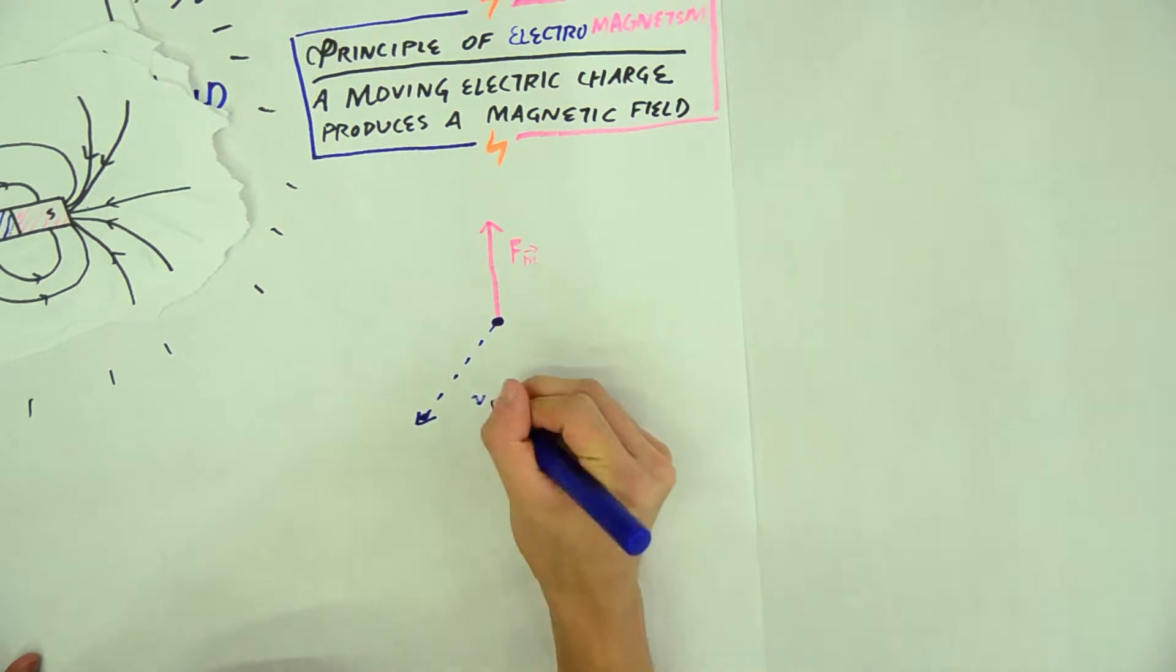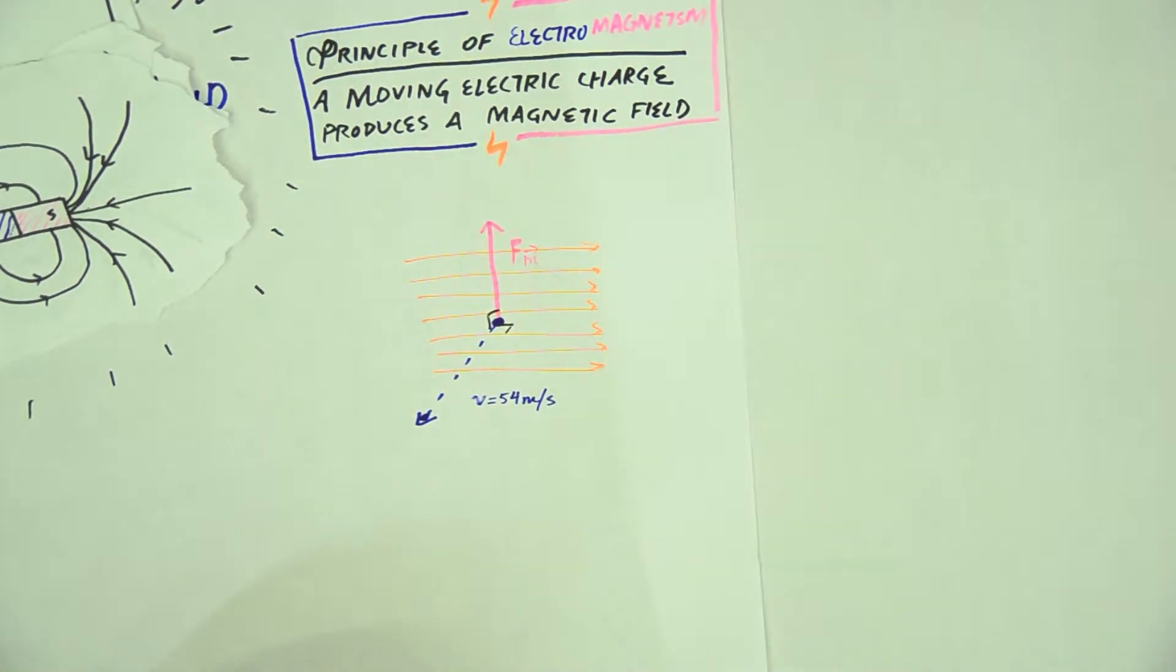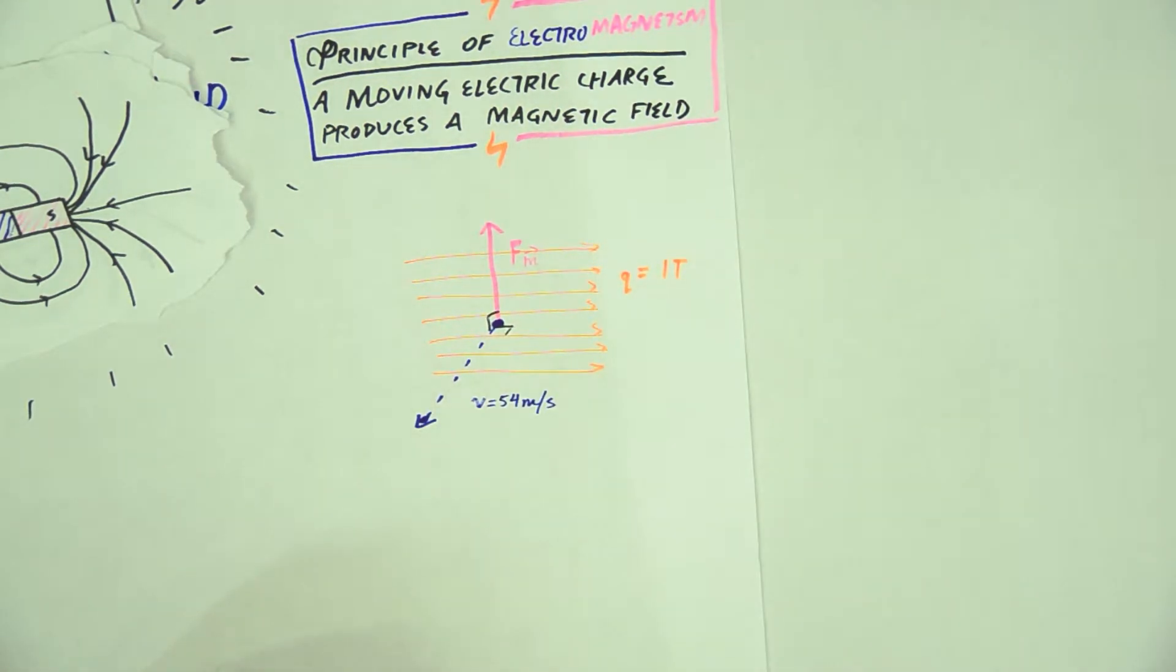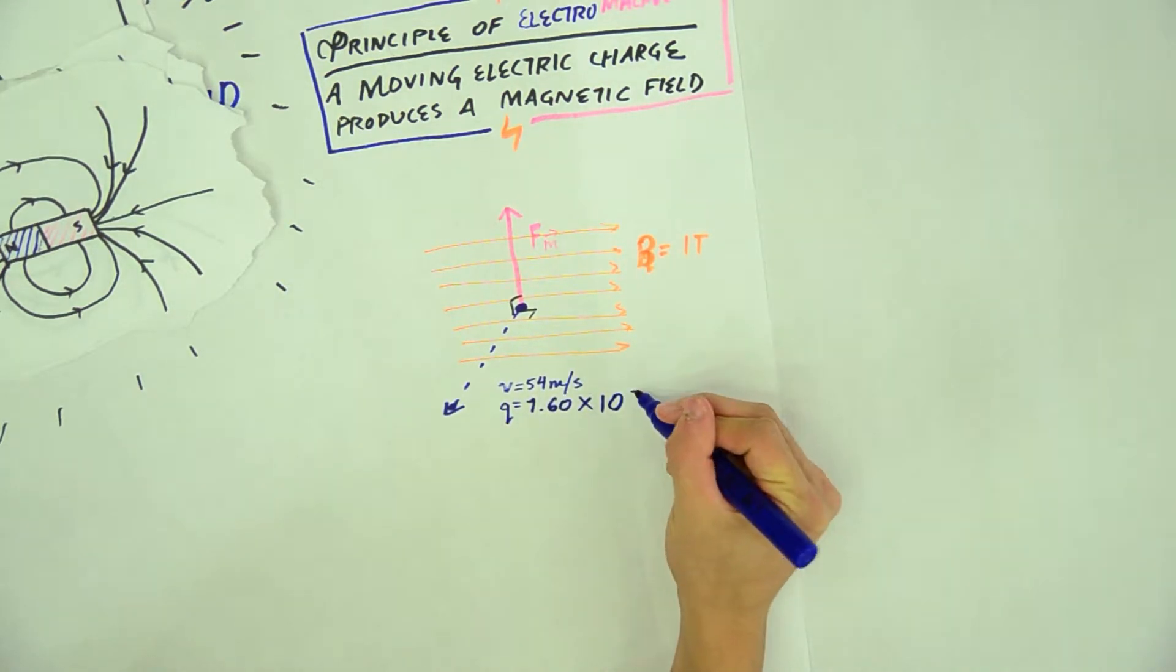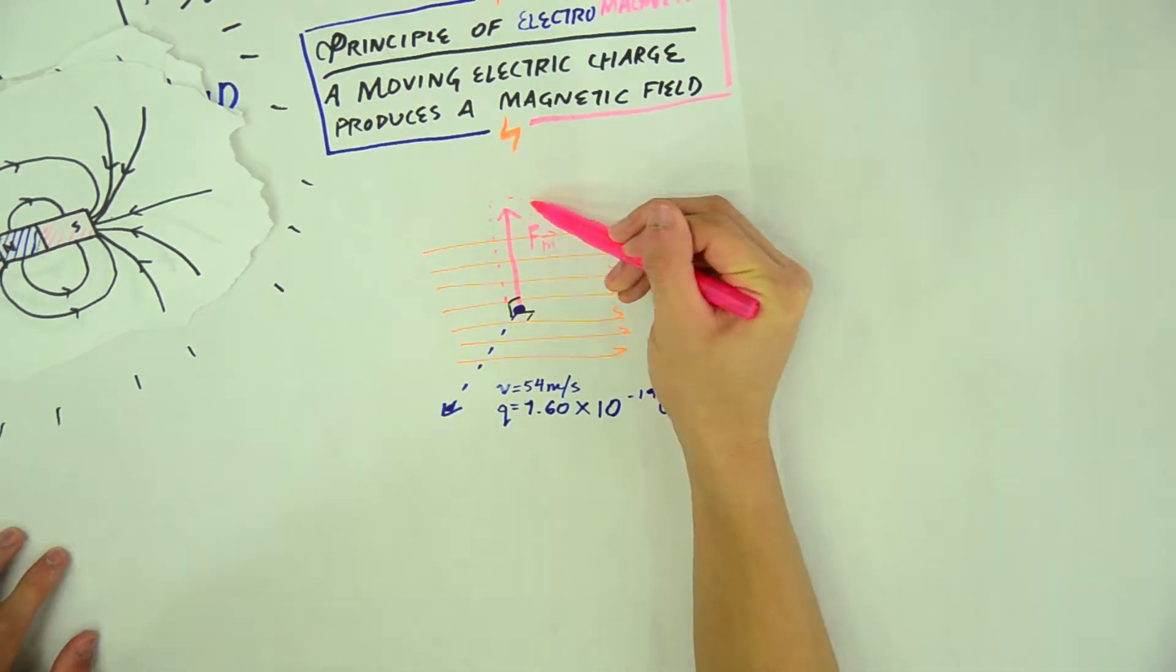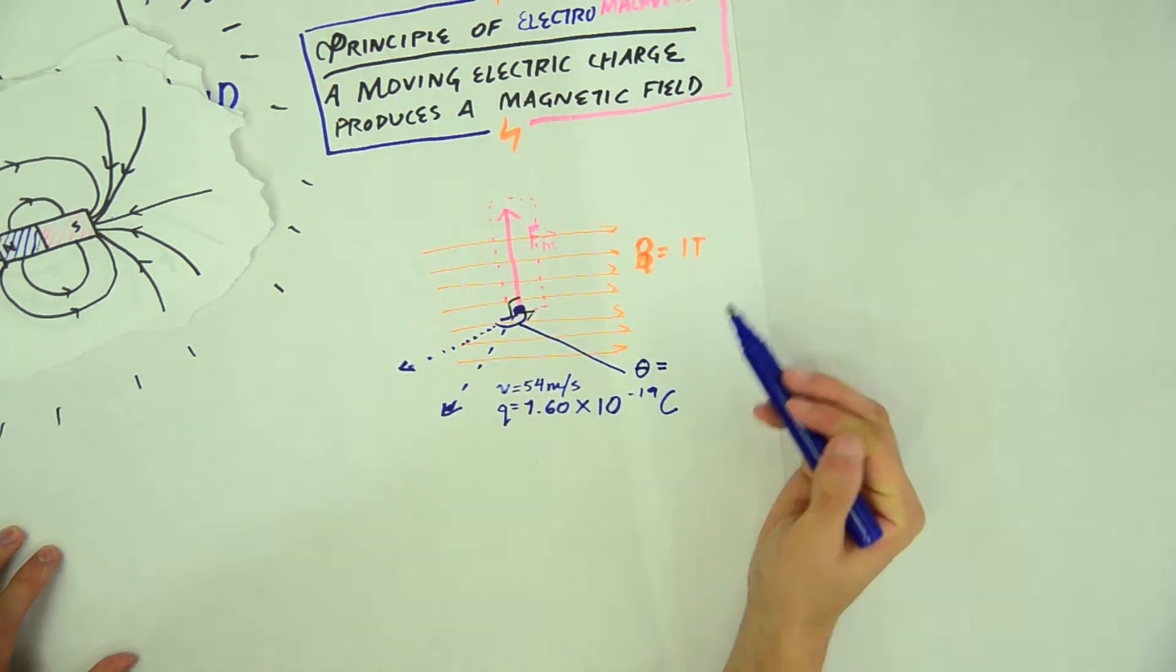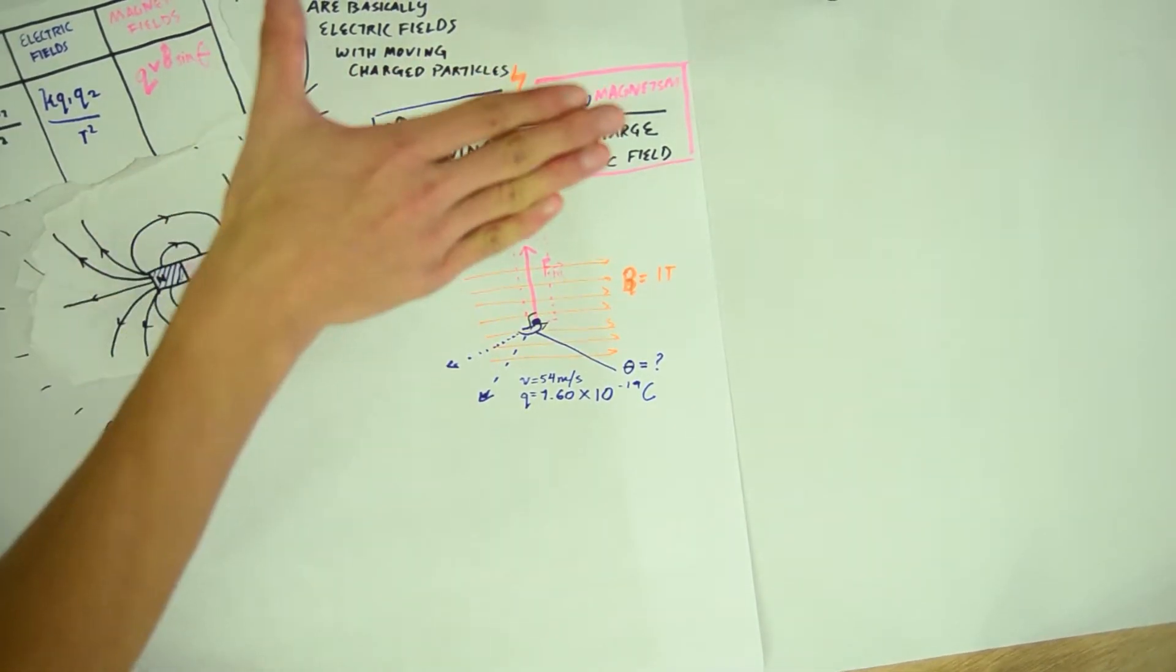By pointing our four fingers in the direction of the magnetic field, our thumb in the direction of the charged particle's movement, our palm will face the direction of the magnetic force. Plug in the equation QVB sin theta, where theta is the angle between the particle and the field, and as theta decreases, the strength of the force of the magnetic field acting on the particle also decreases.